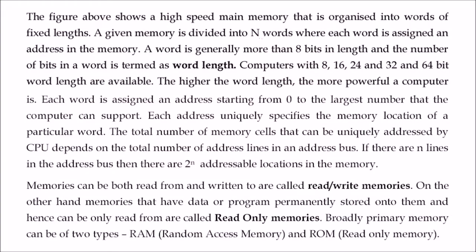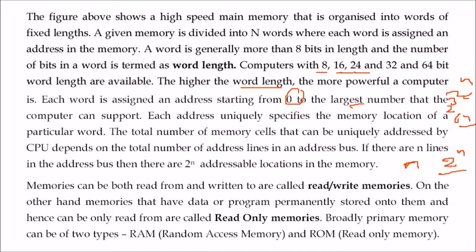Word length can be 8 bit, 16 bit, 24 bit — the higher the word length, the more powerful the computer. Addresses start from 0 up to 2 to the power n. There can be variation: your processor may support 2 to the power 32 while your system is 64-bit. We talk about the address bus — if the address bus has n lines, we say the computer is an n-bit processor.